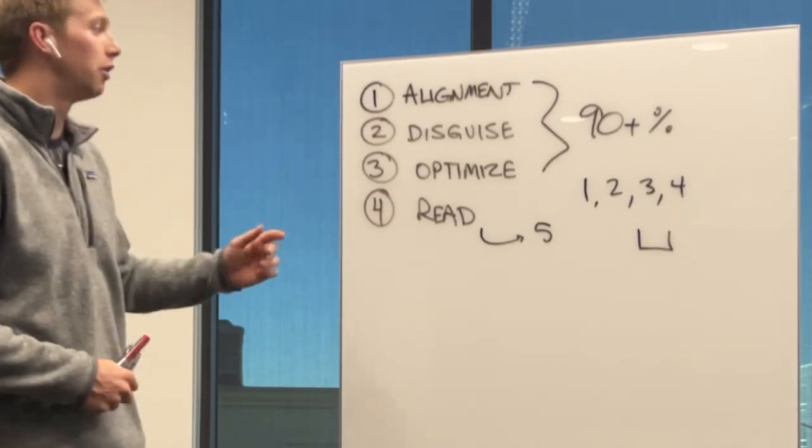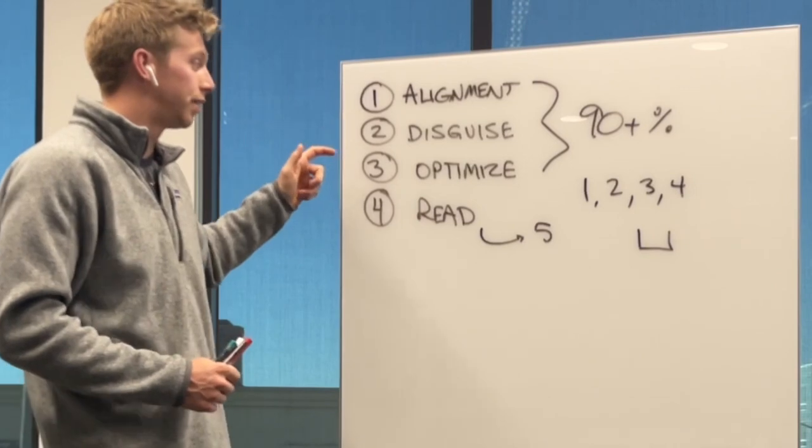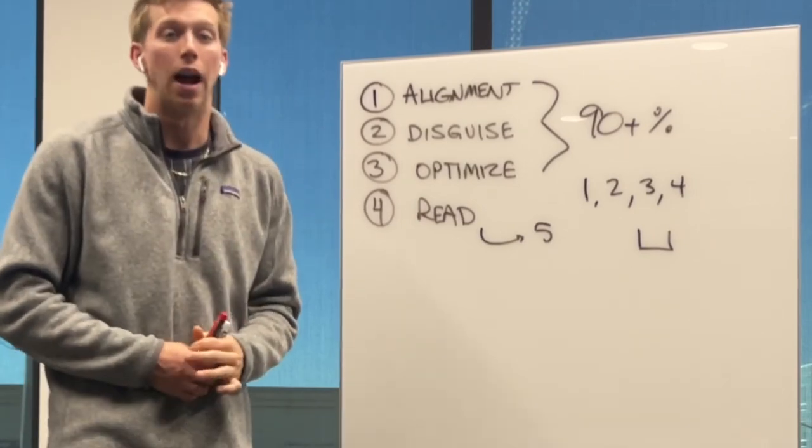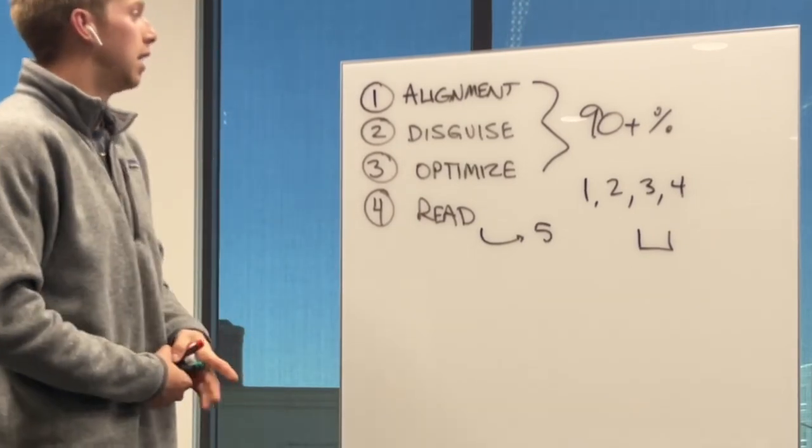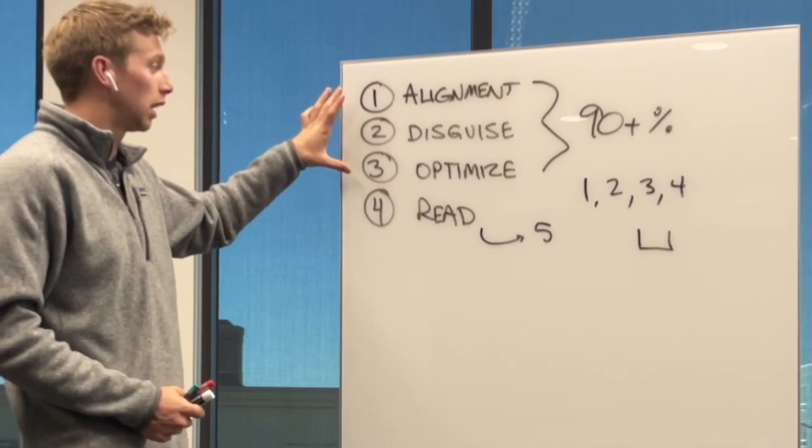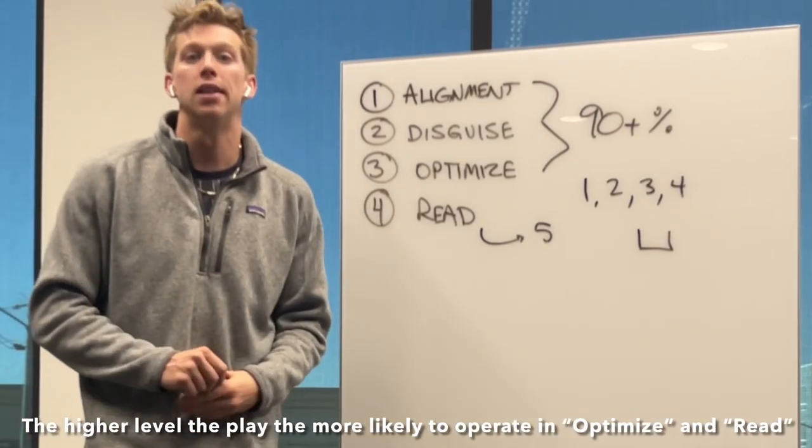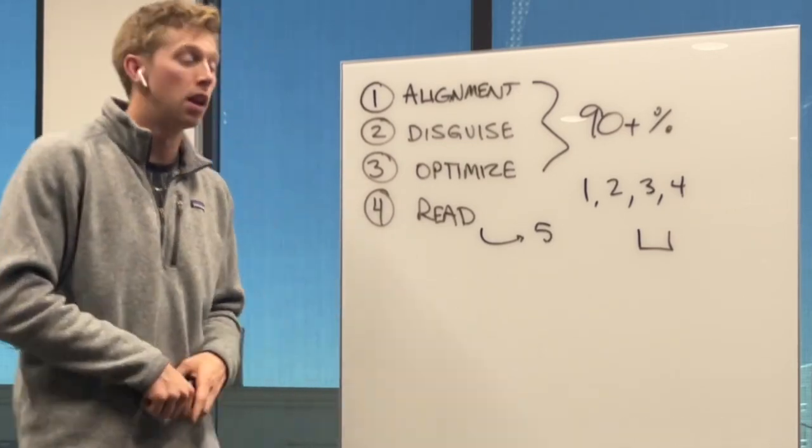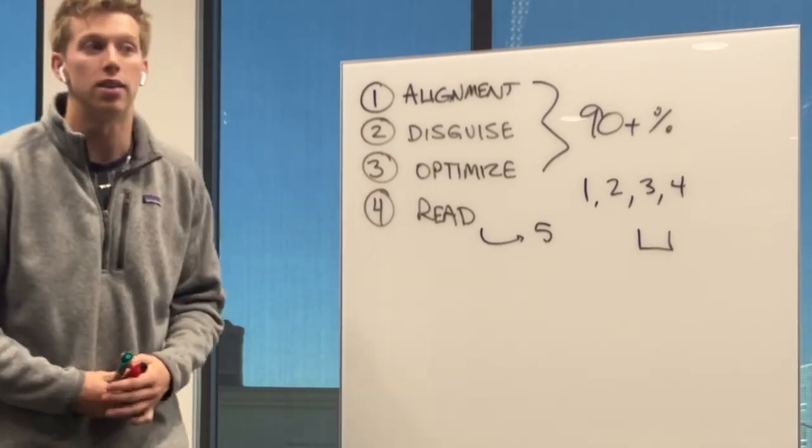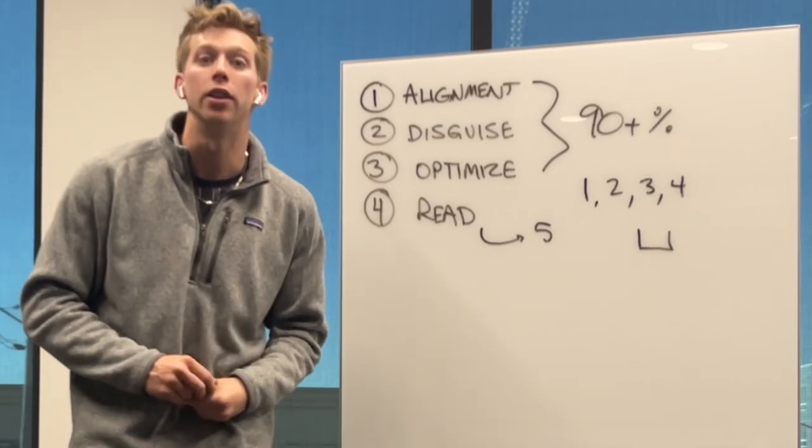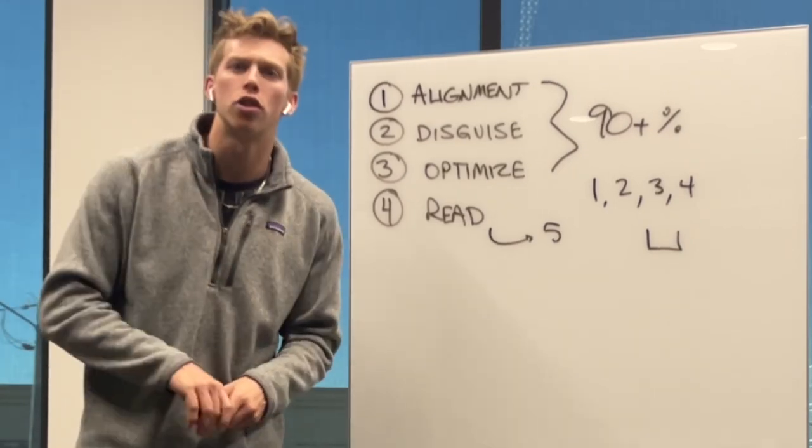So those are my four levels of defense, alignment, disguise, optimize, and read. And I truly, truly believe that 90 plus percent of your defense can be done in zones one, two, and three. And reading is when done correctly or at the highest levels, really unstoppable as an offense when someone has a good read on you. So I'll end with one story.